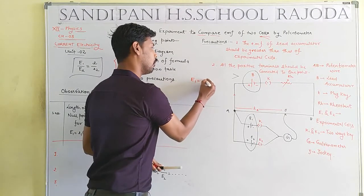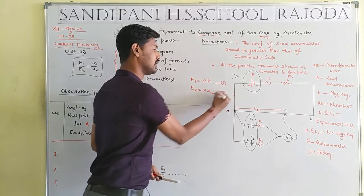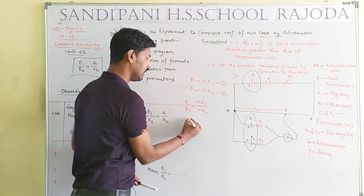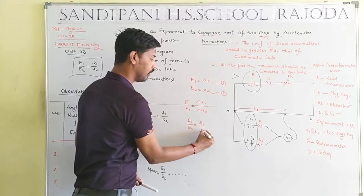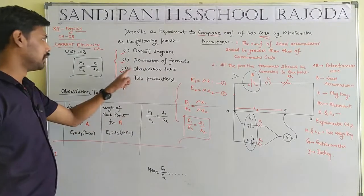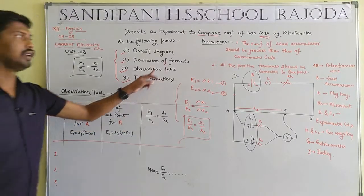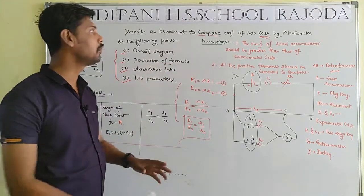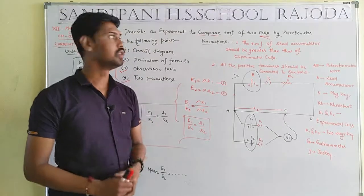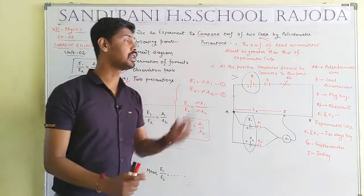I hope students are getting the proper solution. To compare the electromotive force of two cells by use of a potentiometer: derivation gives E1 = ρL1 and E2 = ρL2, so E1/E2 = L1/L2. We covered circuit diagram, derivation, observation table, and two precautions. Thank you for watching this YouTube channel of Santipani Higher Secondary School, Rajoda. Please like, subscribe, and share the channel.